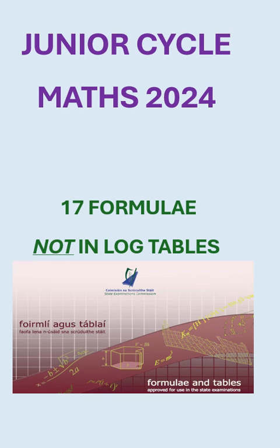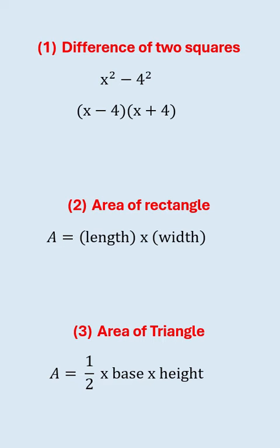17 formulas not in the log tables for the upcoming junior cycle maths exam. The difference of two squares must have a minus and a plus in the factors.